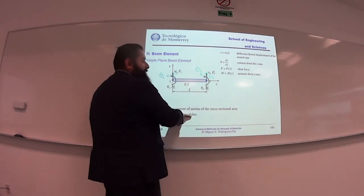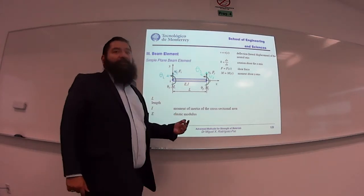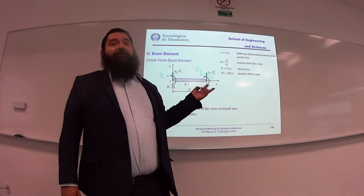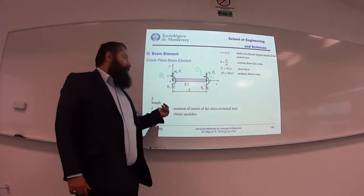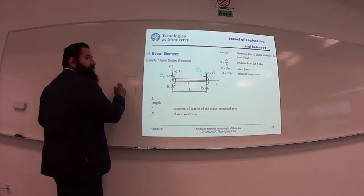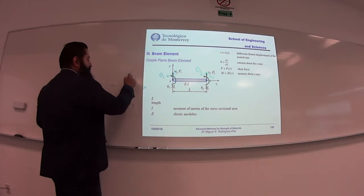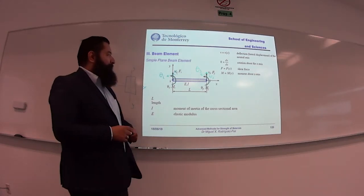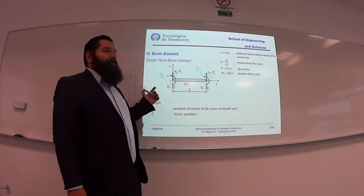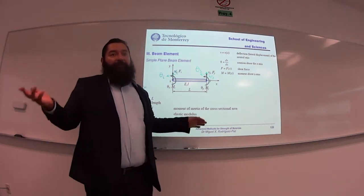The moment of inertia — you learned in statics that any cross-section has two moments of inertia. For instance, if my beam has a rectangular cross-section, we have one moment of inertia in x and one in y. We have to determine which one we are using depending on the orientation of the beam. This starts to be important.